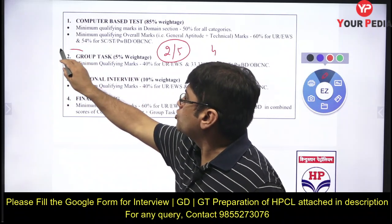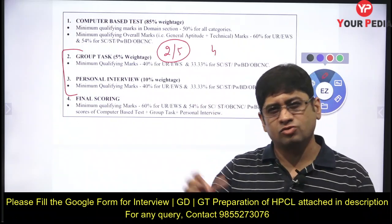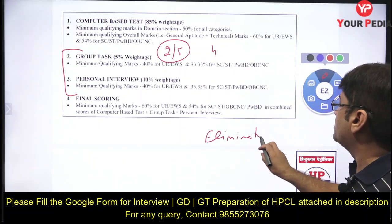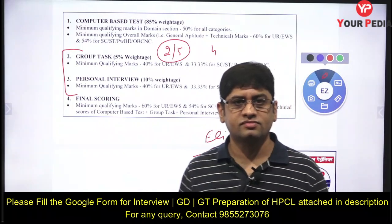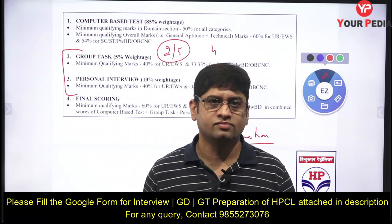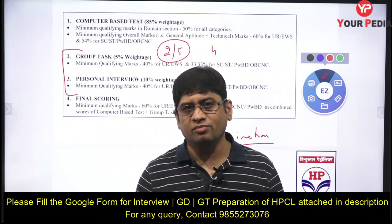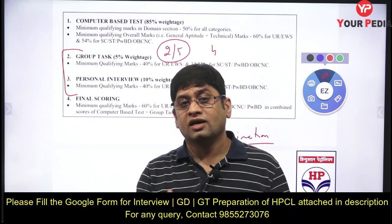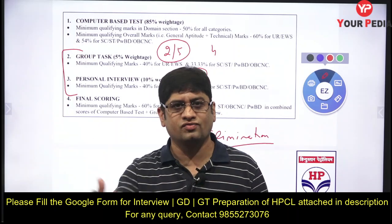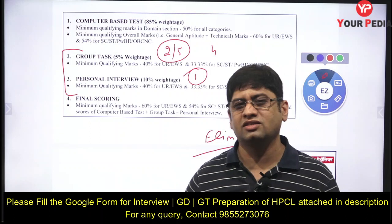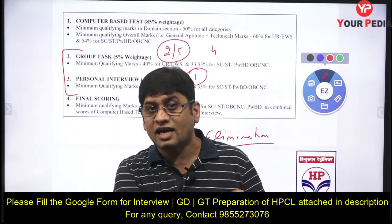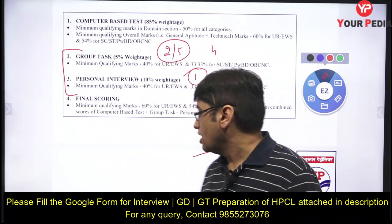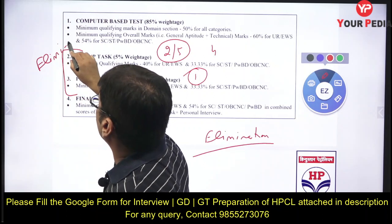Even a 2-4 mark impact can mean elimination. If you are given a task and do not speak at all — just like leaving a paper blank — the evaluator cannot give you marks. They are calling approximately 10 times the number of seats, around 2000 students for 200 seats, so they will definitely eliminate some students. GT and PI are effectively elimination rounds.